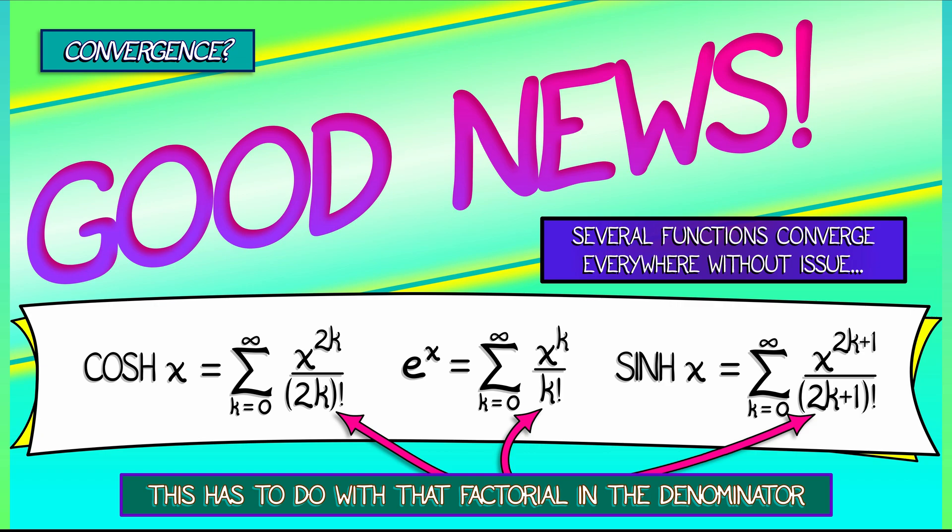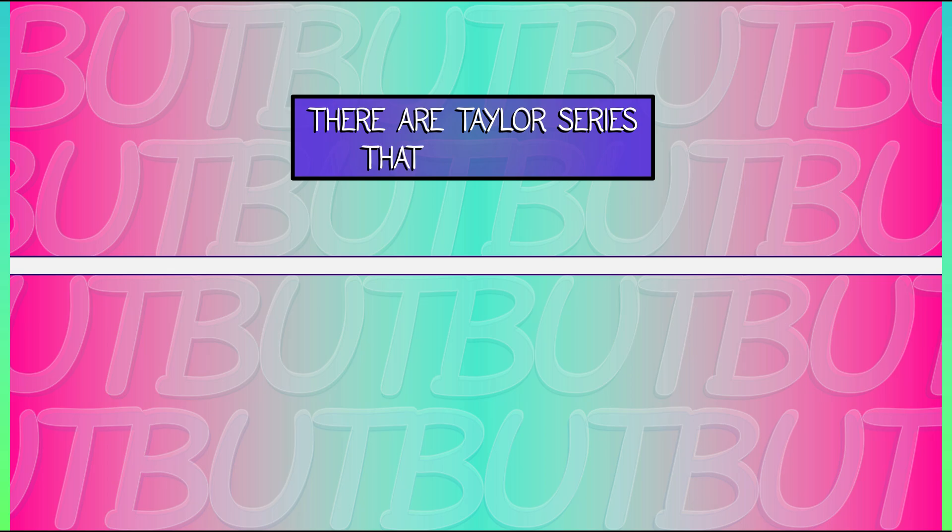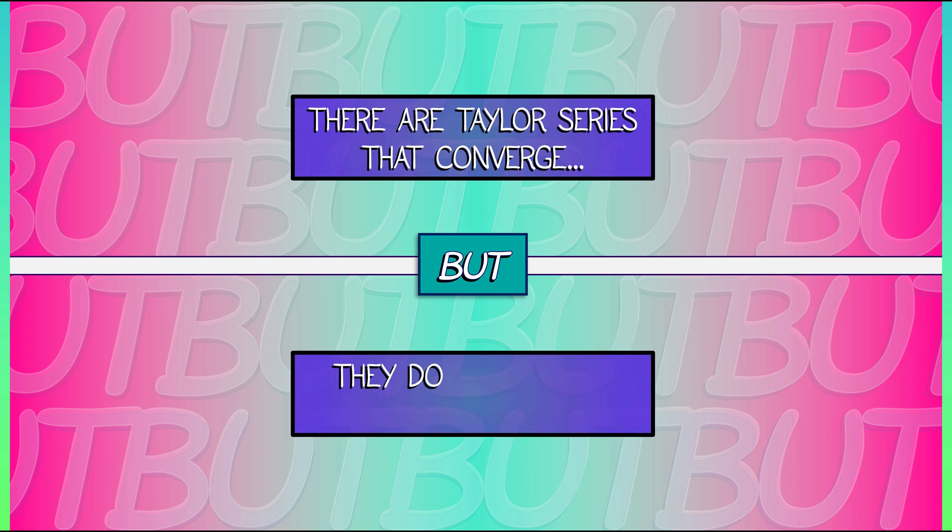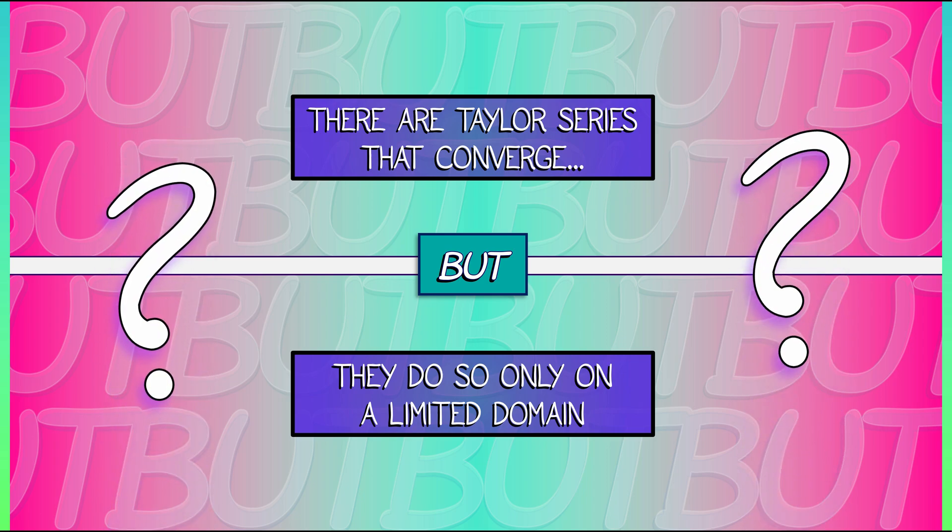Now, here's the issue. There are Taylor series that converge. They converge pretty nicely. But they do so only on a limited domain. They do not do so everywhere, like the exponential series and things derived from it. Now, we haven't seen any explicit examples of this yet. That is what we're going to turn our attention to.